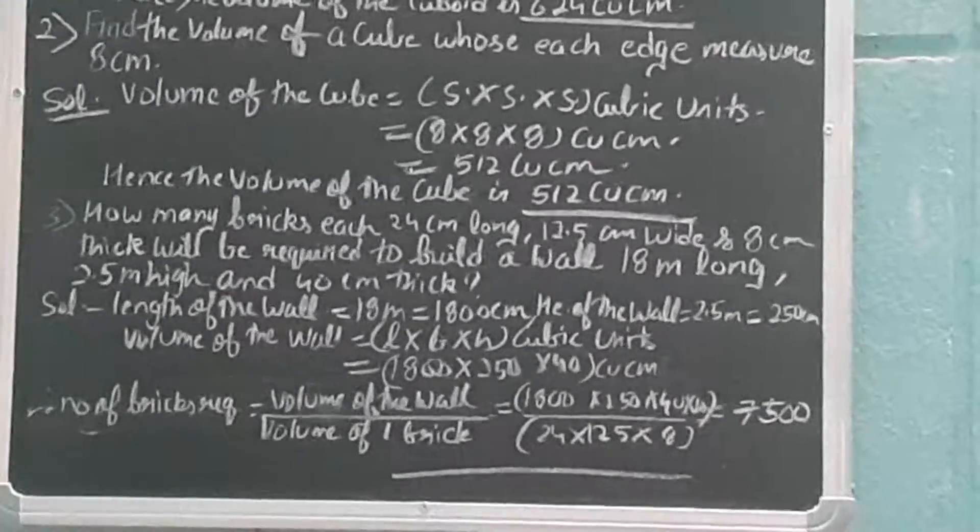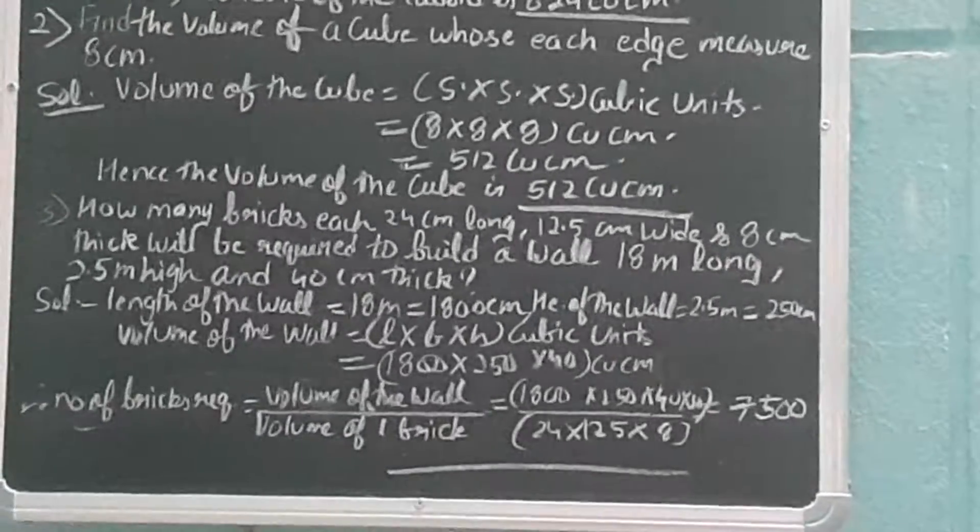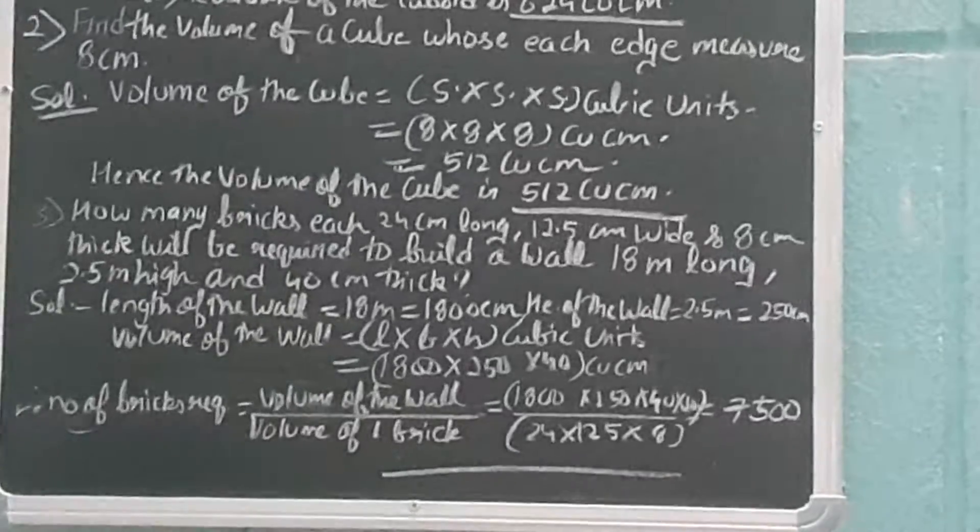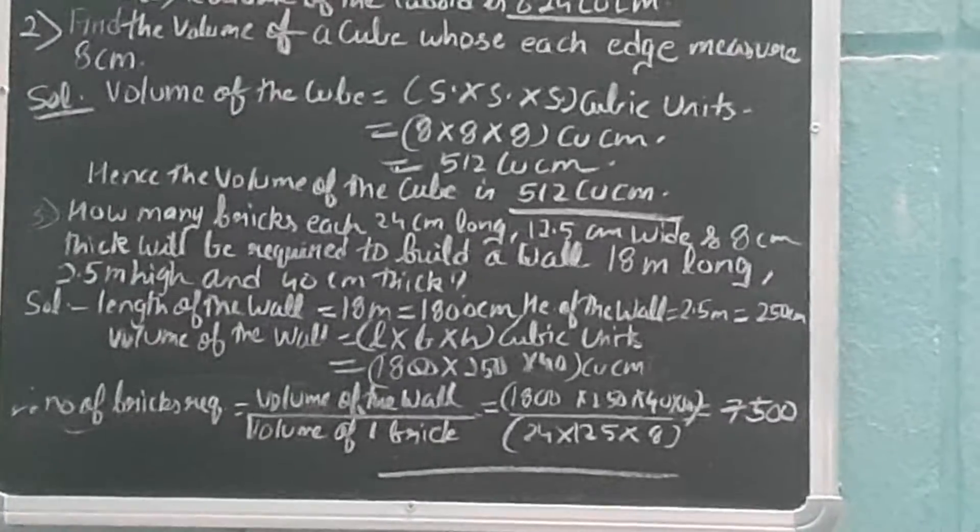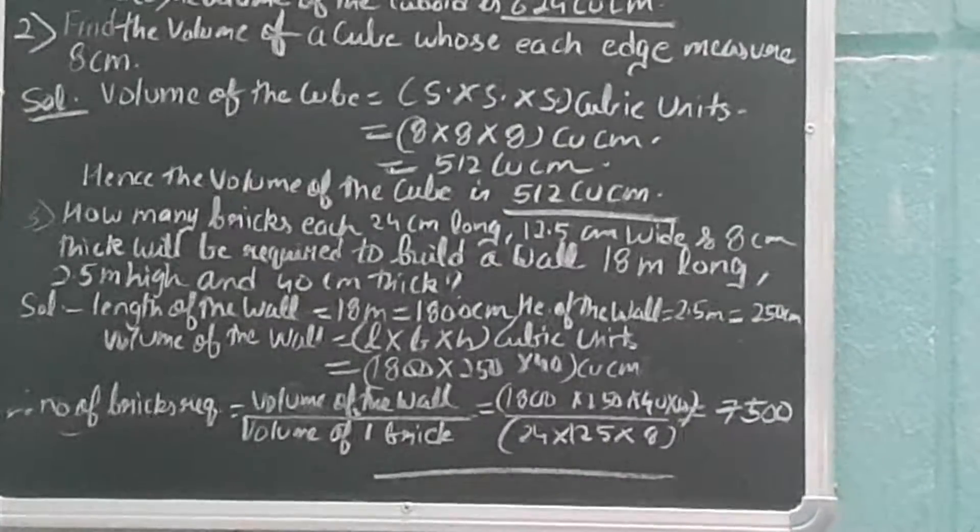Length of the wall is equal to 18 m, so when we convert this into centimeter we'll get 1800 cm. Then height of the wall is 2.5 m, so 2.5 m will change into 250 cm.